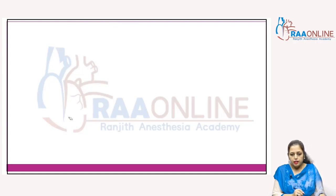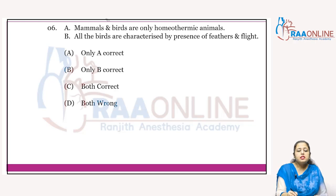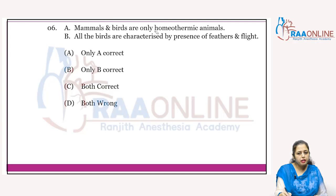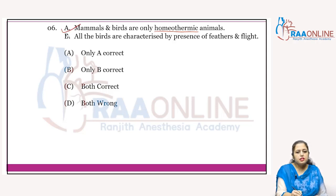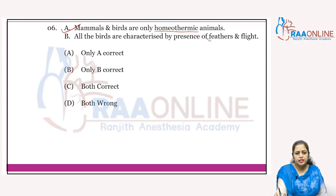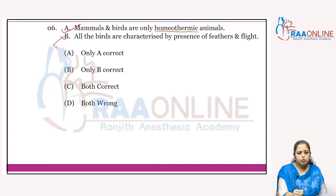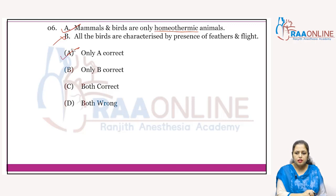Next: 'Mammals and birds are the only homeothermic animals' — homeothermic means they can maintain their body temperature internally. This statement is correct. 'All birds are characterized by the presence of feathers and flight' — no, for example, the penguin cannot fly, so that statement is wrong. The answer is only A is correct.